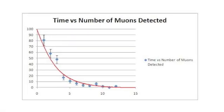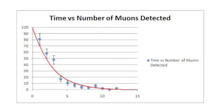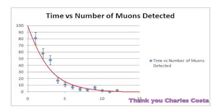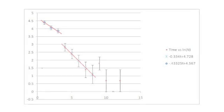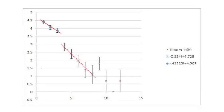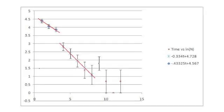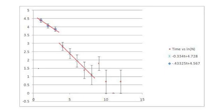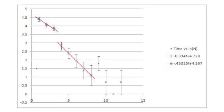An exponential graph can be turned into a linear graph by taking the natural log of each point. Once this has been done, two distinct slopes can be found in the linear graph.